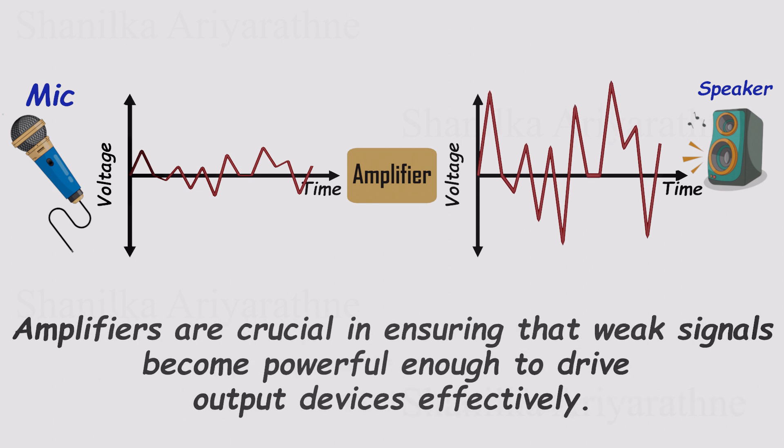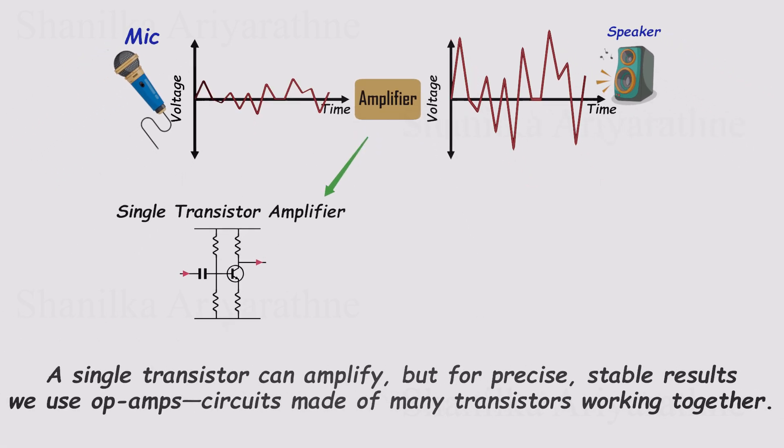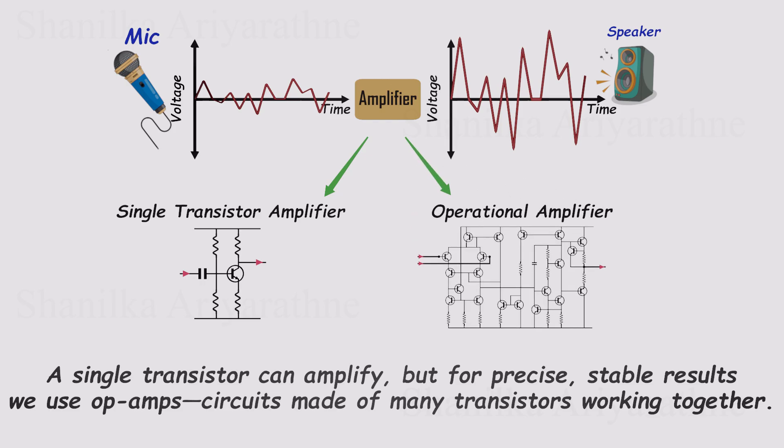The amplifier's main job is to increase voltage, but without changing the shape of the original signal. And while amplifier might sound intimidating, the idea is actually pretty simple. Even a single transistor can be wired up as a basic amplifier. But when engineers want something precise, stable, and easy to use, they usually grab an op-amp, an integrated circuit built from dozens of transistors and components all working together inside a tiny chip.